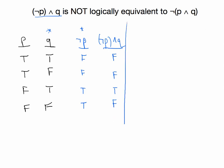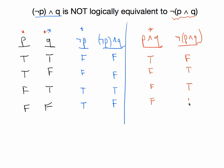Now let me make a dividing bar and switch to a different color for the right-hand side. I'll need to make a P and Q column first — this is a straight conjunction: true, false, false, false. Then I need to negate that, so not (P and Q) — I flip the truth values: false, true, true, true. Now looking at the results, in a couple of cases these two statements have different truth values under the same conditions — that makes them not logically equivalent. So that's three examples of how to use truth tables on two-variable statements to prove logical equivalence or show that two statements are not logically equivalent.